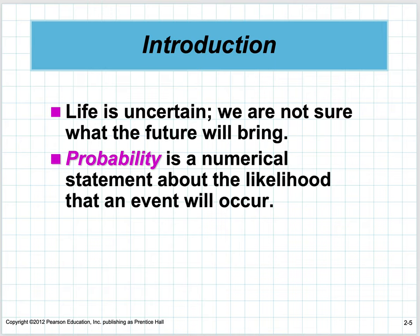Probability has to do with uncertainty. Life is uncertain — we don't know what the future will bring, even though we try to forecast it all the time. Weather forecasting, sales forecasting — it's all the same. We assume the immediate past will dictate what the immediate future will look like. Probability is a numerical statement about the likelihood that an event will occur: what percent of the time, what number of trials would you expect it to happen?